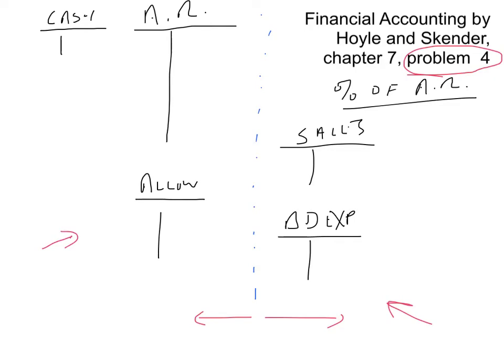In problem four, year one sales are $1,200,000, so we debit accounts receivable and credit sales for $1,200,000. Cash collections are $800,000, so we credit accounts receivable and debit cash for $800,000. Then we come to that write-off entry: $30,000 in accounts are written off, so we credit accounts receivable for $30,000 and debit the allowance account for $30,000, removing those accounts from the records.